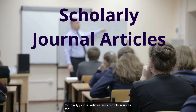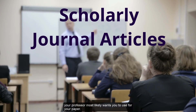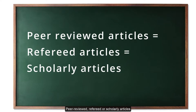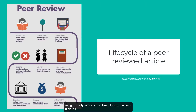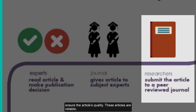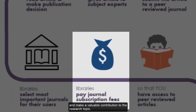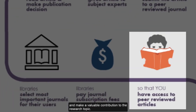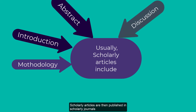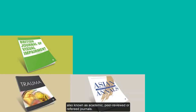Scholarly journal articles are credible sources that your professor most likely wants you to use for your paper. Peer-reviewed, refereed, or scholarly articles are generally articles that have been reviewed in detail by scholars in the same field in order to ensure the article's quality. These articles are reliable and make a valuable contribution to the research topic. Scholarly articles are published in scholarly journals, also known as academic, peer-reviewed, or refereed journals.